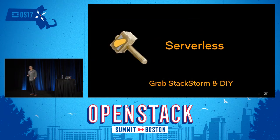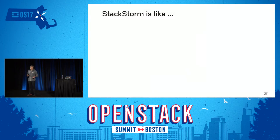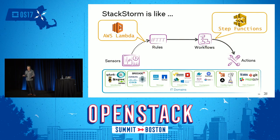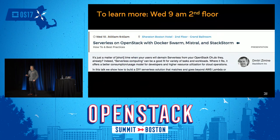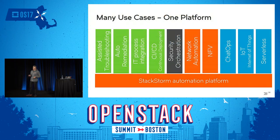Serverless is becoming a big trend right now and it's delivering massive value. This is a picture of OpenWhisk — if you squint a little and compare it to StackStorm, we have events, triggers, rules, and results. That's what we do in StackStorm. What is Amazon Lambda and Amazon Step Functions? Lambda is actions and sensors, and Step Functions is the workflow engine we use — exactly like that. We're seeing people use StackStorm for do-it-yourself serverless implementations. Wednesday at 9 a.m., we have a session dedicated to StackStorm and serverless as it relates to OpenStack.